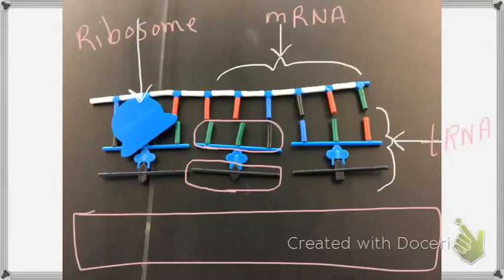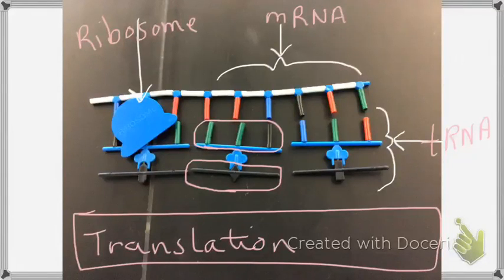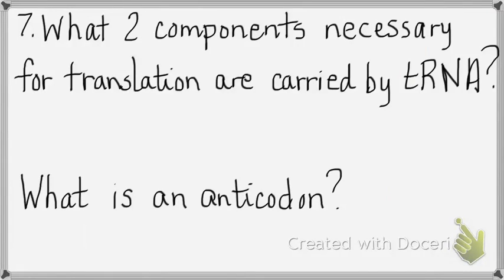Transcription or translation — which process does this picture show? This one is translation. The two components necessary for translation that are carried by tRNA are the anticodon and the amino acid.